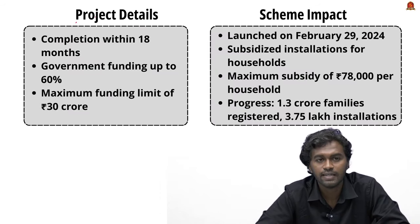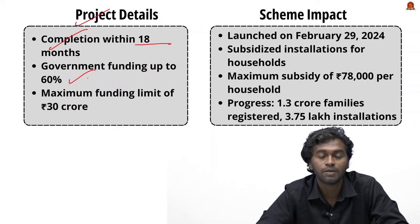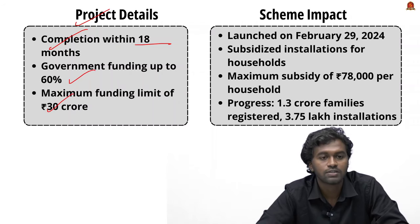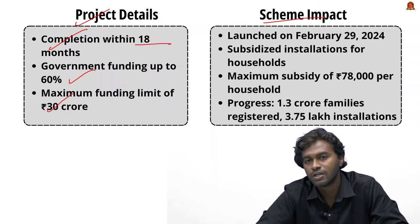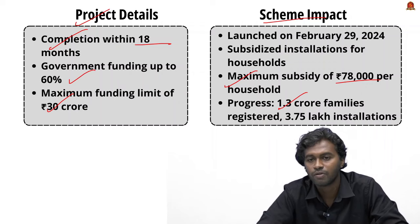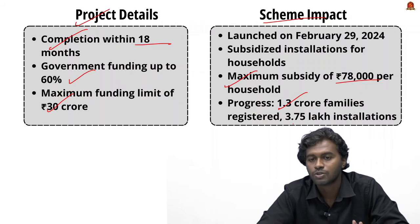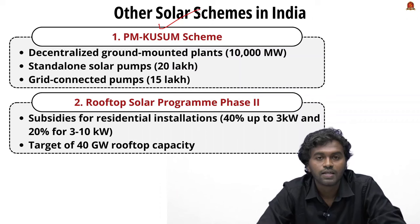Regarding project details under the Muft Bijli Yojana: projects must be completed within 18 months, the government funds up to 60% of the project cost, and the maximum funding per project is ₹30 crore. As for the scheme's impact, the maximum subsidy per household is ₹78,000. Around 1.33 crore families have registered under the scheme, and out of these, 3.75 lakh families have already installed rooftop solar technologies.